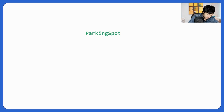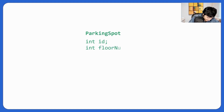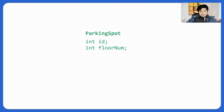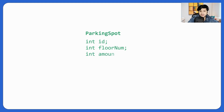We'll make ParkingSpot as an abstract class. Let's give it a unique ID, and of course every parking spot is on a different floor — that's mentioned in the requirements. We want to assign parking spots based on a nearest-first or farthest-first strategy, so we'll add an int floor number. Every parking spot — whether compact, mini, or large — will have these data members. Third, every spot will have an amount, a specific parking charge, so let's add int amount. We also need a boolean isFree to indicate if the spot is currently free.